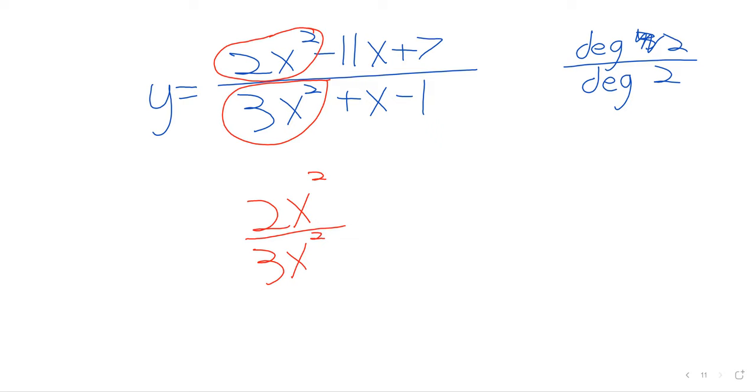And I've said that we should take the leading terms and divide them. But what happens if you do this division is that the x terms cancel. x squared divided by x squared just goes away. And you are left with only a number. And the number you are left with is going to be the horizontal asymptote.